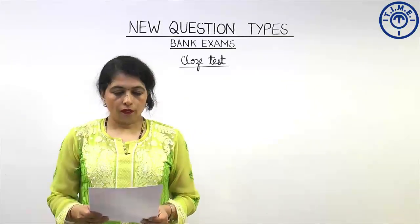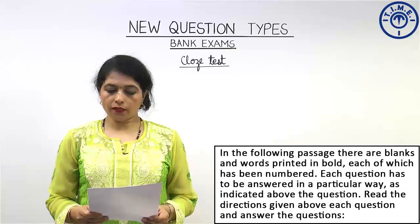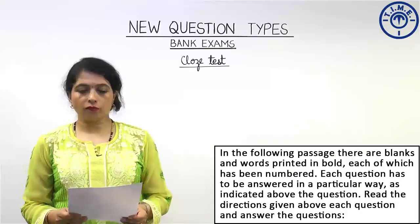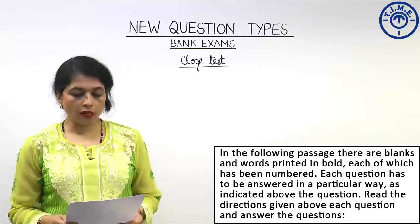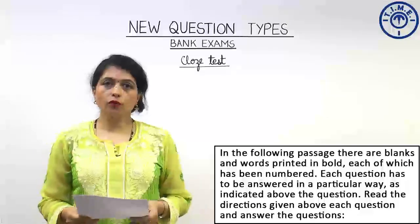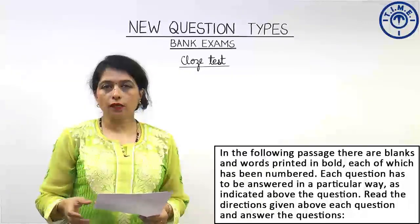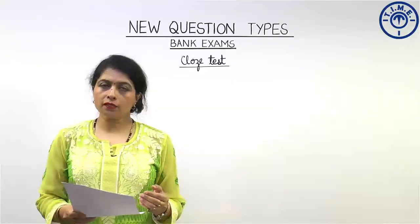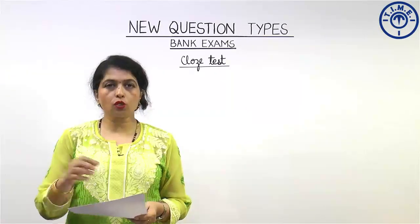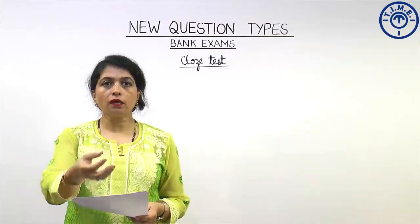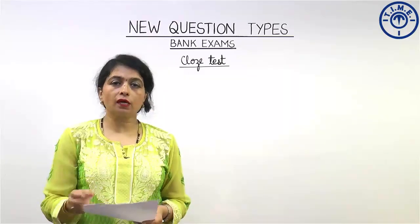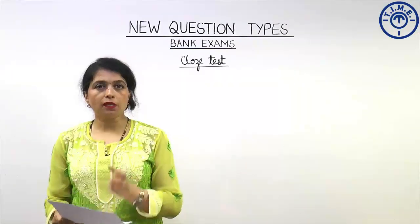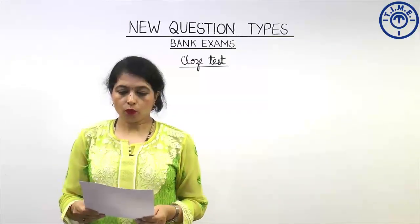Please pay attention as I read it out. The directions first: in the following passage, there are blanks and words printed in bold, each of which has been numbered. Each question has to be answered in a particular way as indicated above the question. Now, instead of a passage dotted with blanks alone, there are certain other instructions present next to each blank. There are various kinds of questions this cloze test presents and you have to keep these sub-directions in mind as you proceed.